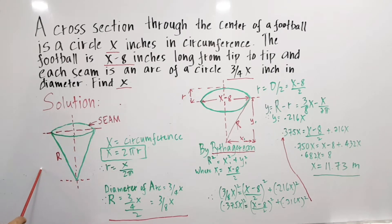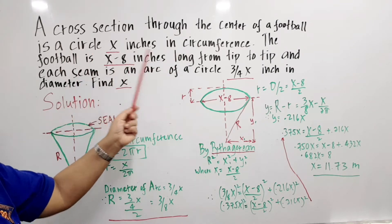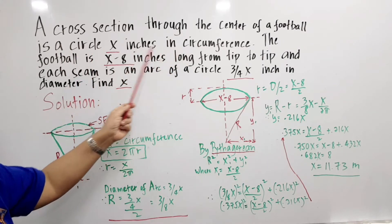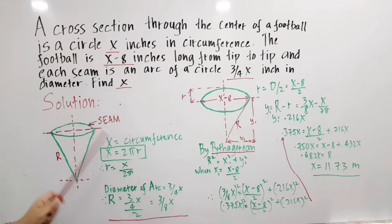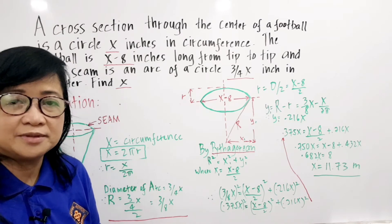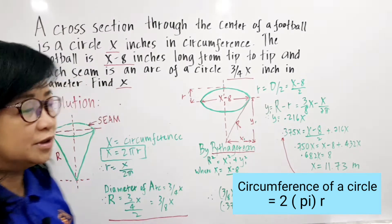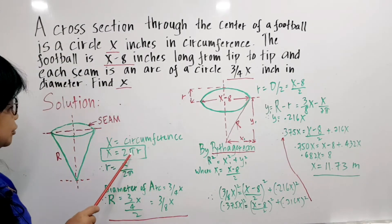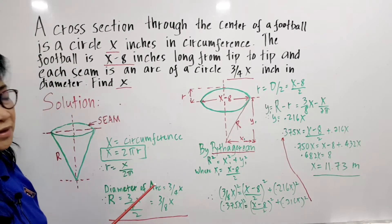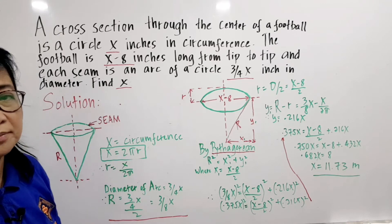The radius of the arc is 3/4 x, and the diameter is 3/4 x — this is the diameter of the arc. So the circumference of a circle is x. The formula of the circumference of a circle is equal to 2πr, where r is the radius of a circle and π is equal to 3.14.